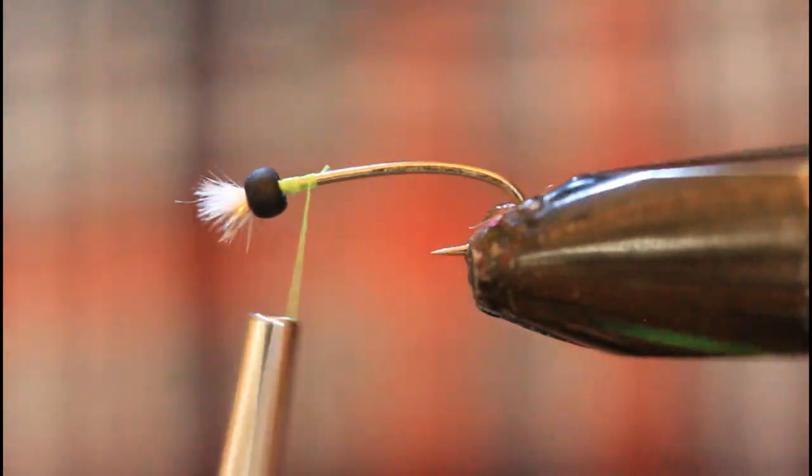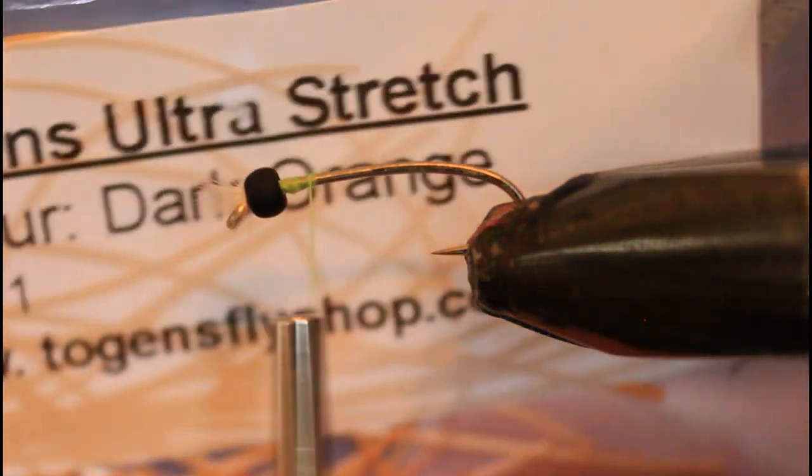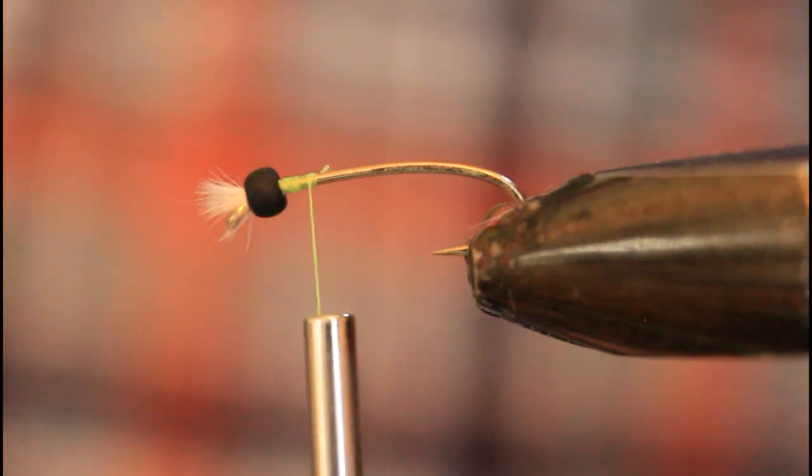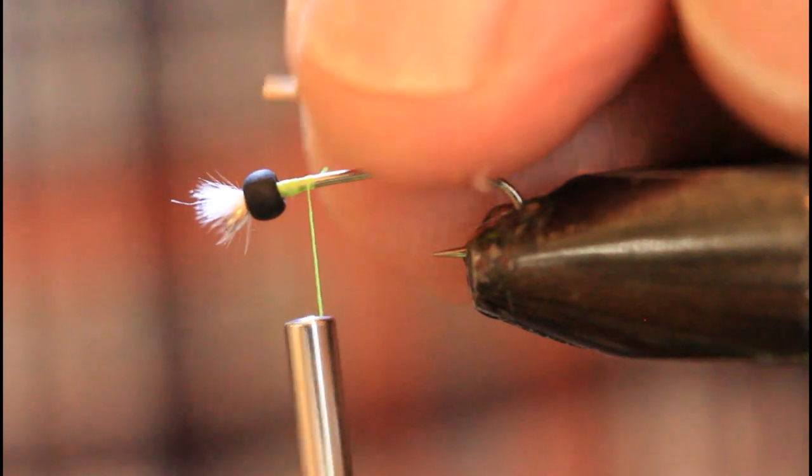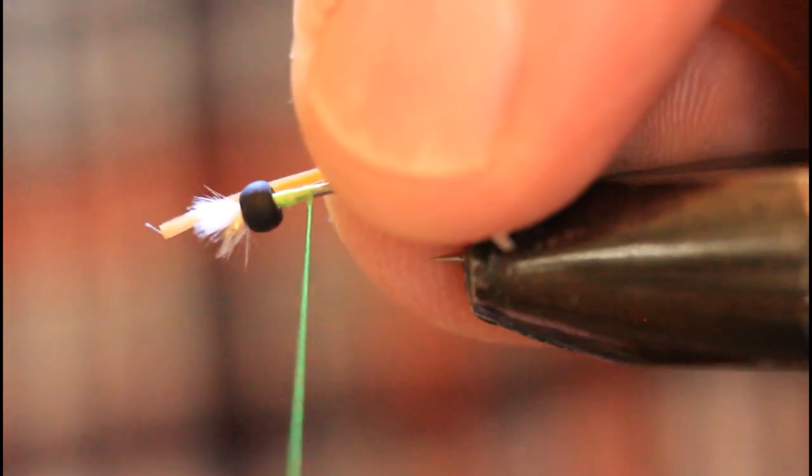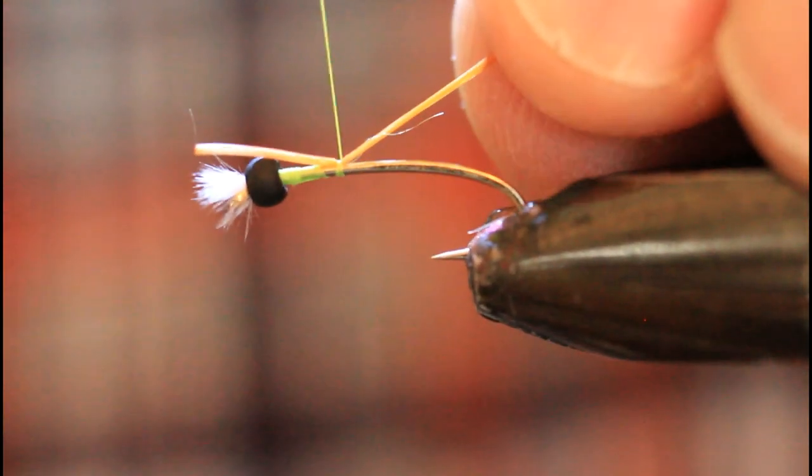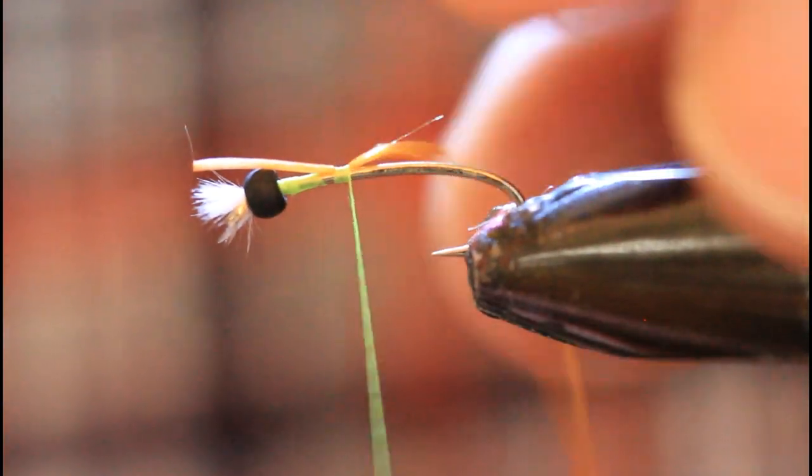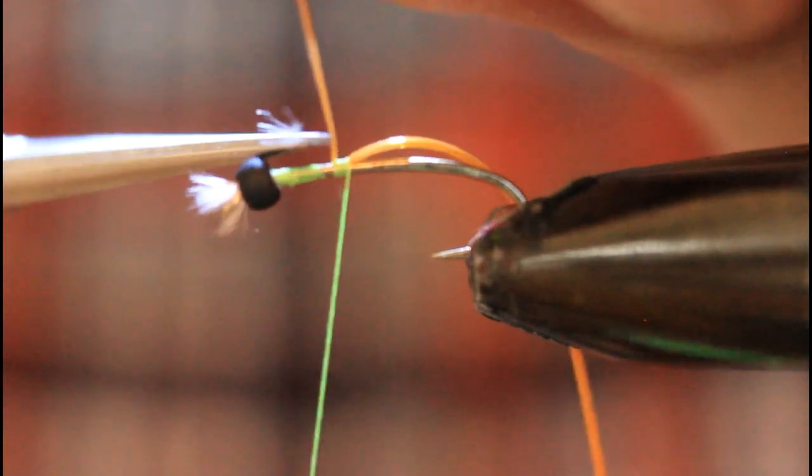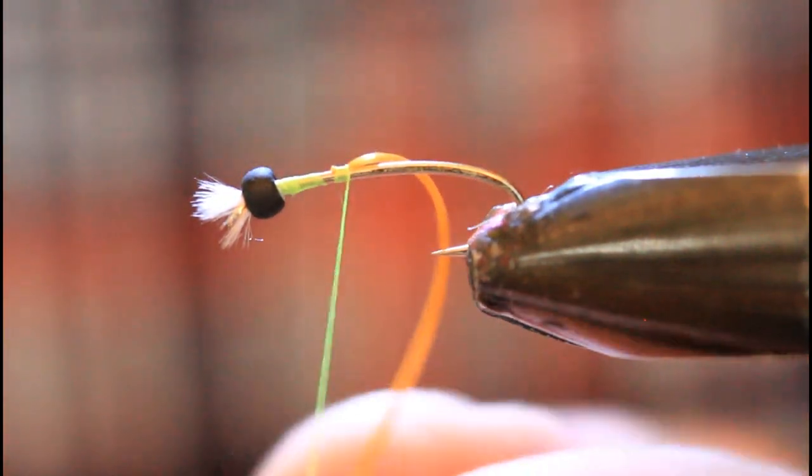So then bring that thread back in there. And give it a few wraps to secure it in place. Then our underbody material is Togan's Ultra Stretch in dark orange. And I like to use the stretchy material because as you're stretching it, you can really flatten it out. It's got some bulk. That's why we tie it in here. So what I like to do with this is give it almost a half an inch of a tag end. Then pull it taut as I give it a couple of wraps. And then I'll grab the tag end and pull that really taut as well, almost to the breaking point. Cut it off close to the hook and then that tag end disappears under the thread wraps.